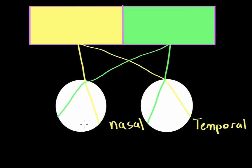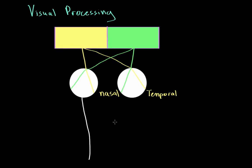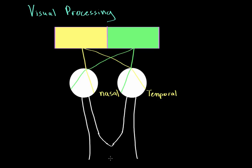The eye is connected to the brain via the optic nerve, which exits the back of the eye and goes into the brain. Interestingly, the optic nerves from both eyes actually converge at a point known as the optic chiasm. They converge there and then break off again, moving even deeper into the brain.